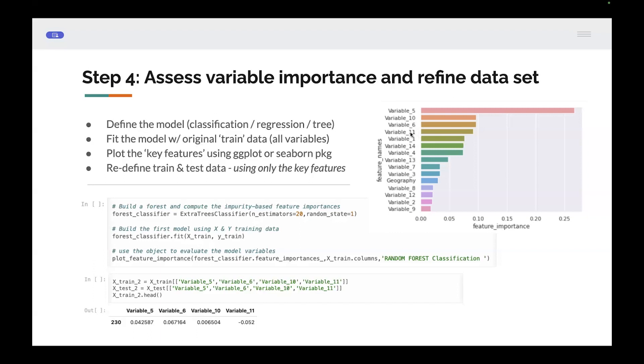For example, in this case, I'm using a classification model. As I mentioned before, we have classification and we have regression. I'll show you at the end actually how we can compare the two models against each other. But in this particular case, we're using classification. The ones that come out as the most important are variable five, six, 10, and 11. And we can see here that they're all continuous variables.